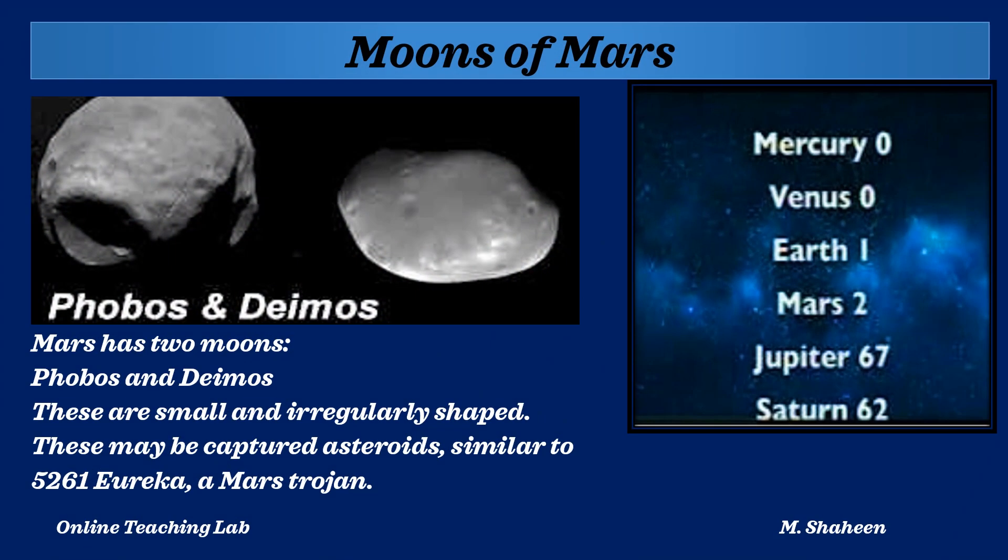If we talk about the moons, Mars has two moons. Their names are Phobos and Deimos. If we talk about all the planets individually, there is no moon with Mercury and Venus, while Earth has one moon, Mars has two moons, Jupiter has 67 moons, and Saturn has 62 moons.